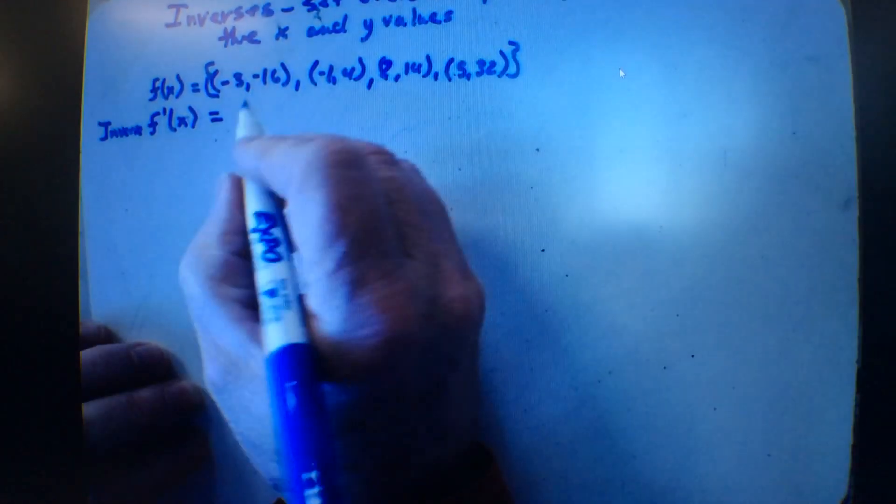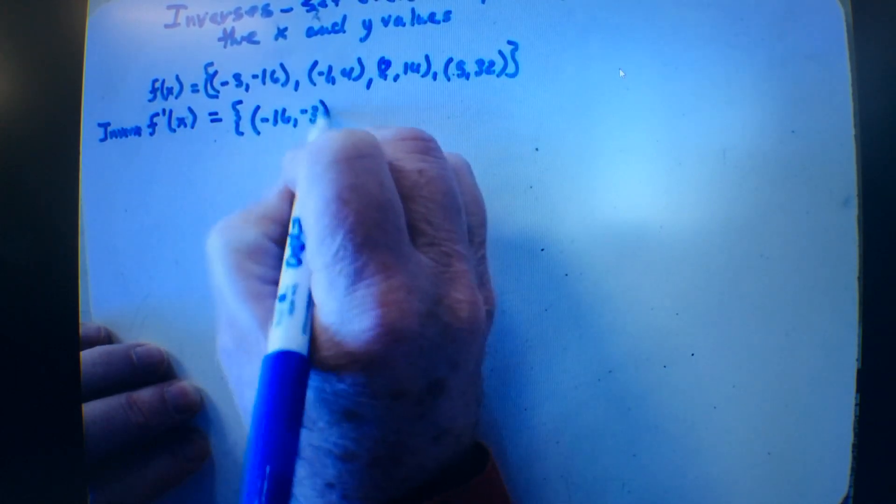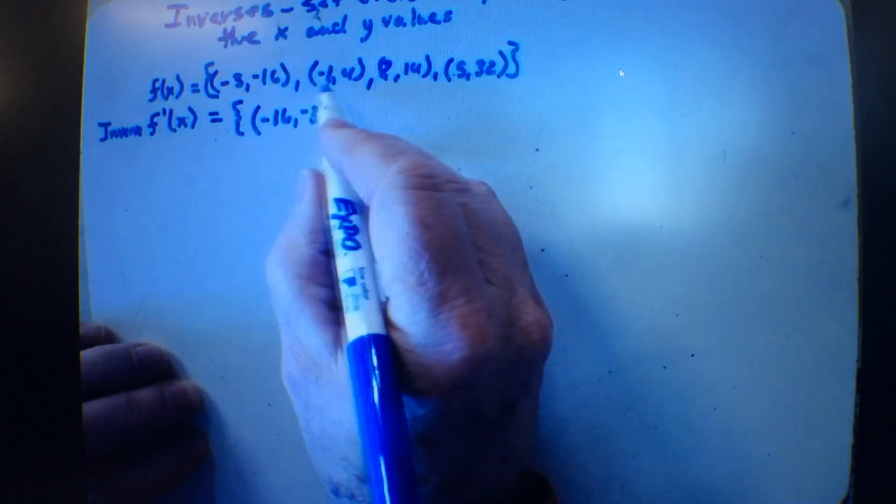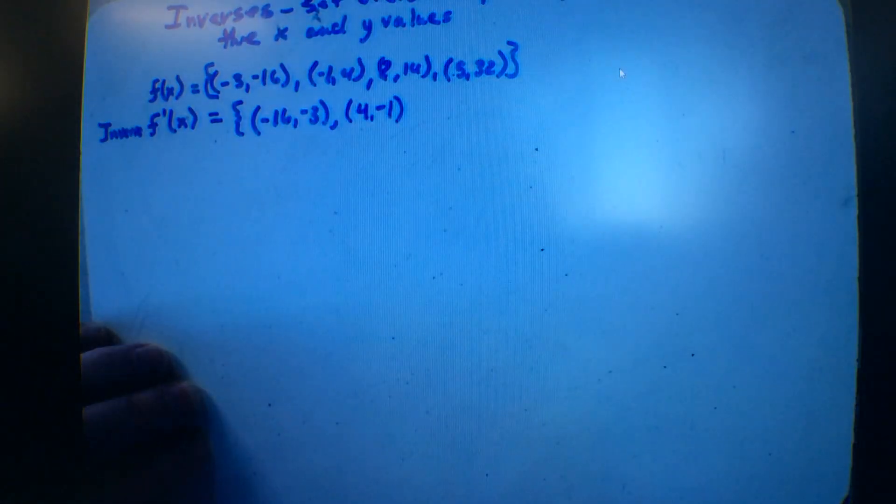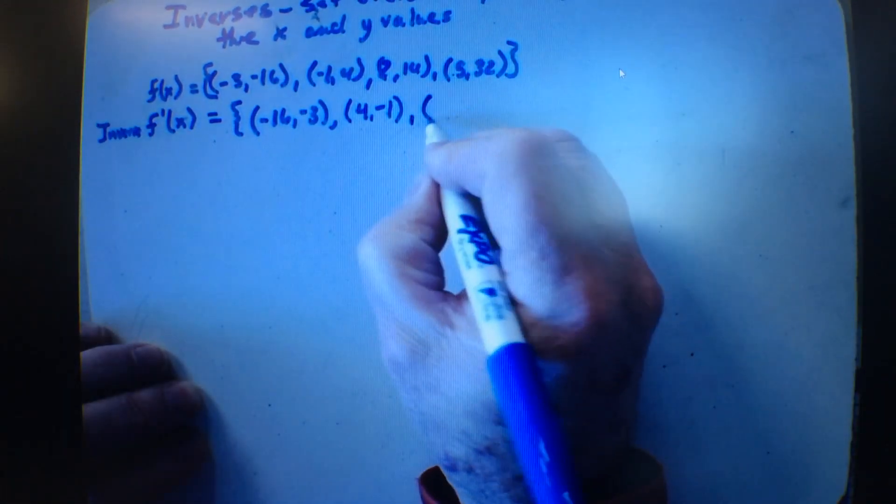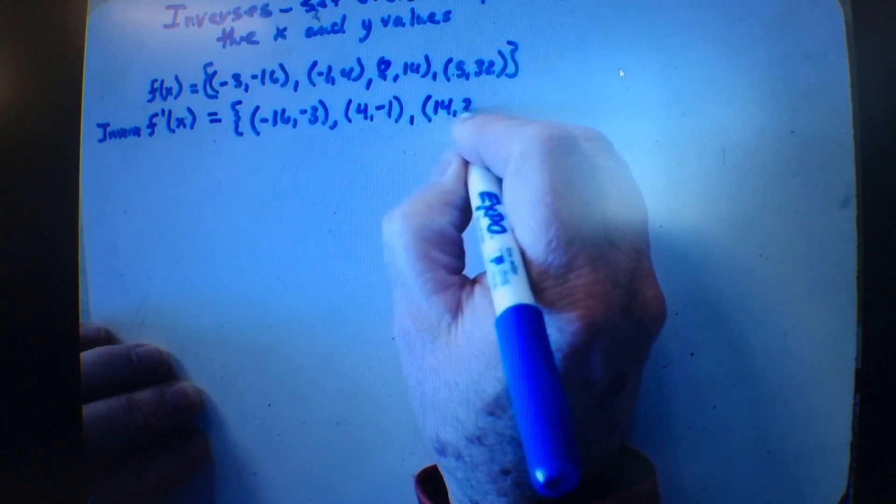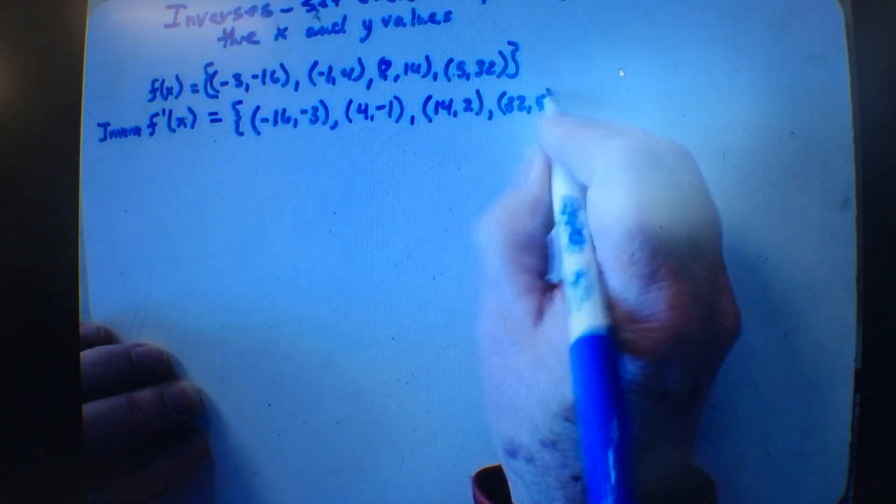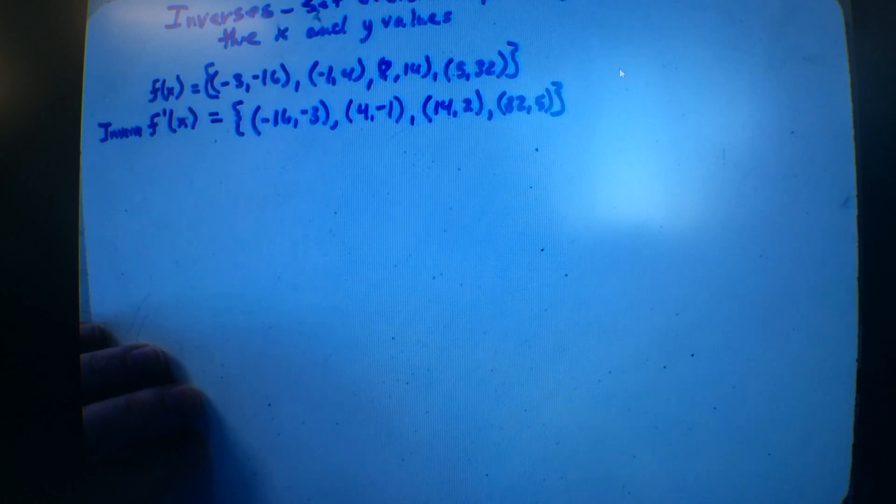Okay, so my new set then, watch this. I do a squiggly. It's a negative 16 and a negative 3. What happened to the x and the y? They exchanged, right? Then I go to the next one, and it is what? 4, negative 1, correct? And the next one is 14, 2. And the next one is 32, 5. And that is the inverse of the original.